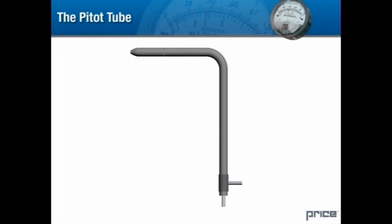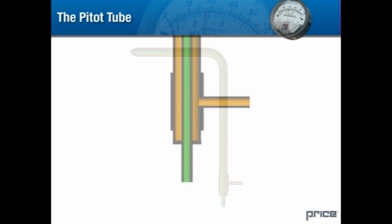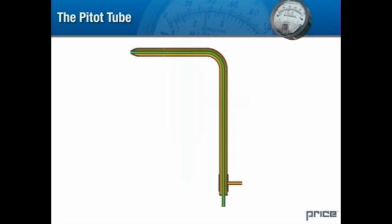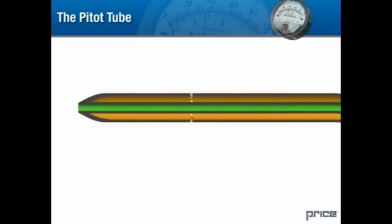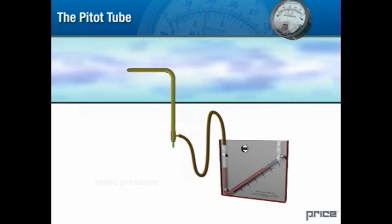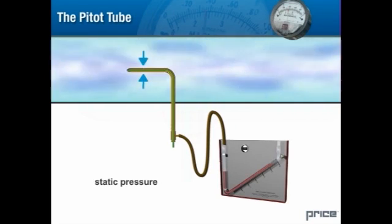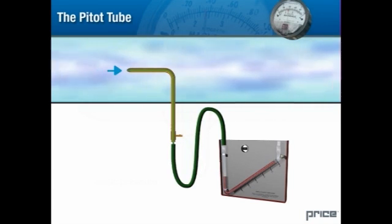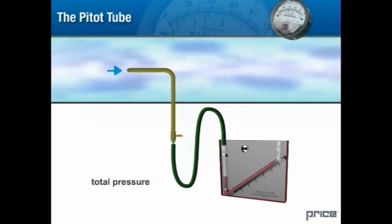Pressure measurements are often made with a device called a pitot tube. The pitot tube can be used to measure all three types of pressure depending on how it is connected to an inclined manometer. In this cross section of a standard pitot tube, we see that it is really two tubes in one, with taps that allow us to connect a manometer to either the inner or the outer tube. The outer tube receives its signal from small holes in the tube wall and is exposed to the duct static pressure only. The inner tube receives its signal from the hole facing the air stream and is therefore exposed to the total pressure.